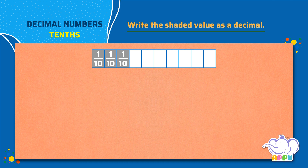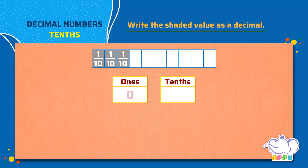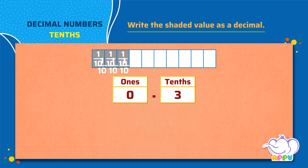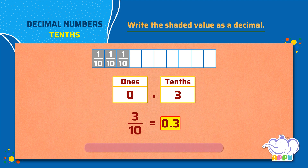There are three tenths shaded in grey. We don't have ones, so we write zero in the ones place. We write three in the tenths place. So three over ten equals zero point three. The shaded part as a decimal number is zero point three.